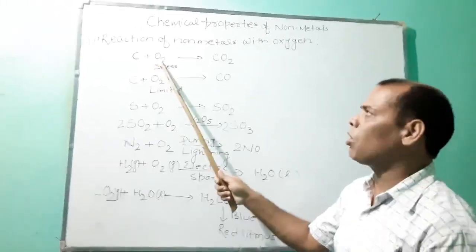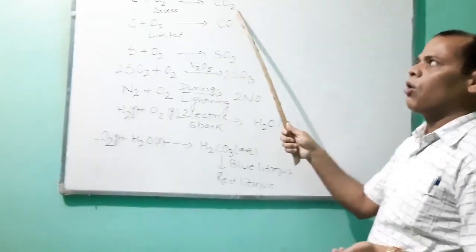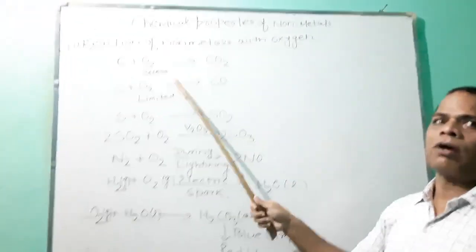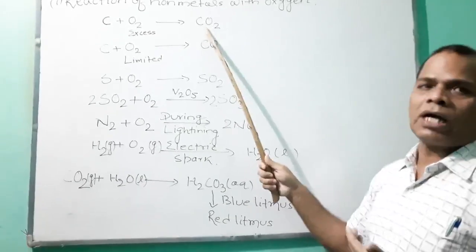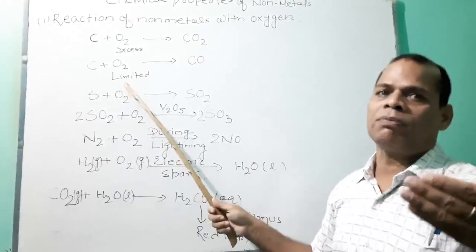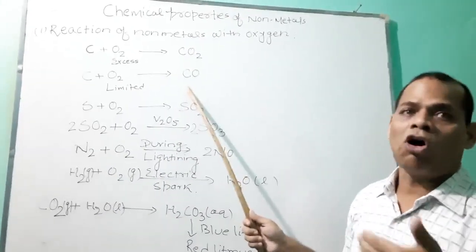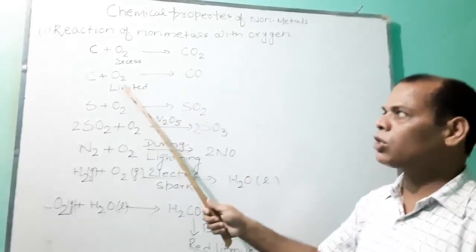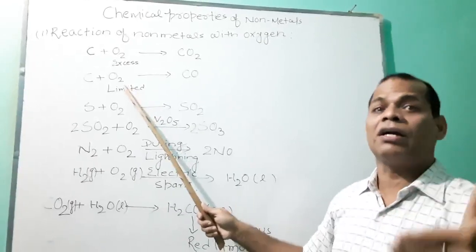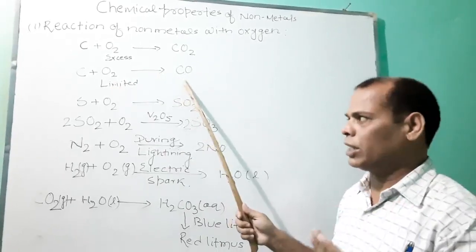Carbon reacts with oxygen. When excess oxygen from air is taken, it forms carbon dioxide. When a limited amount of oxygen is supplied, it forms carbon monoxide. So it depends on the supply of oxygen — when you change the condition, the product also gets changed.